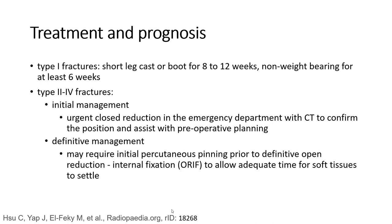Treatment and prognosis: Type 1 fractures are managed with a short leg cast for 8 to 12 weeks, non-weight bearing for at least 6 weeks. Type 2 and higher fractures require urgent closed reduction in the emergency department with CT to confirm position and assist with preoperative planning. Definitive management may require initial percutaneous pinning prior to open reduction internal fixation, to allow time for soft tissue to settle.